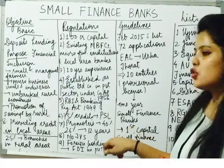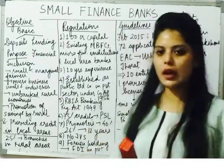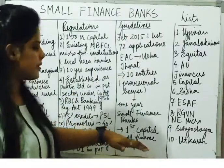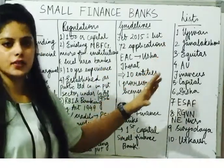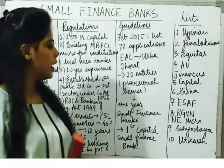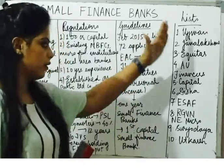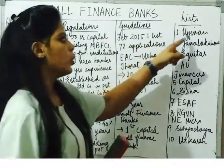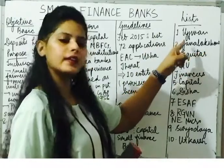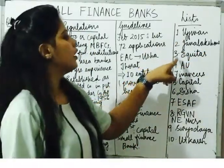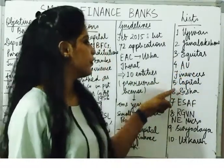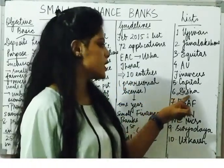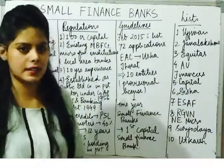The committee provided provisional licenses to 10 entities on a temporary one-year basis. They were given the tag of small finance bank, then they got converted into small finance banks. Of the 10 entities, 1 did not convert due to capital issues, and the remaining 9 entities after their provisional period were converted to small finance banks that started operations in India.